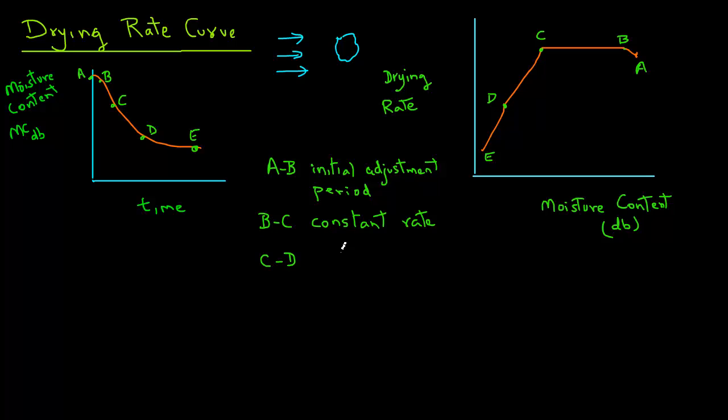From C to D, the drying rate decreases and quite often for different food materials, you just see one period like this and we call it the falling rate period.